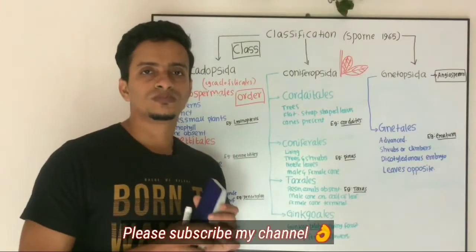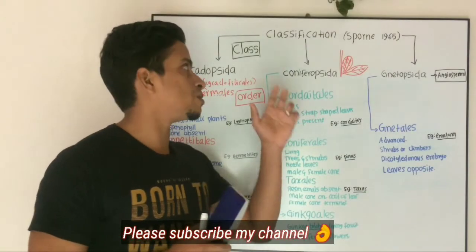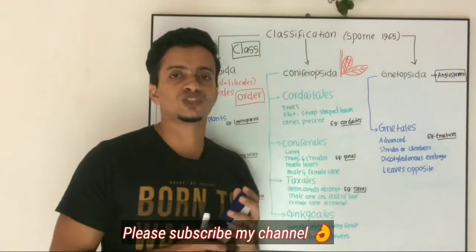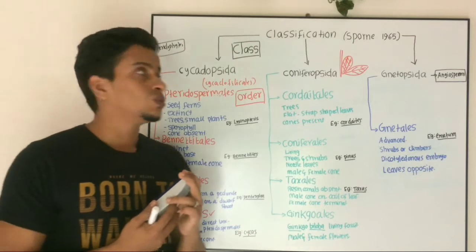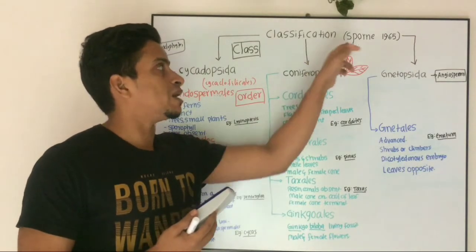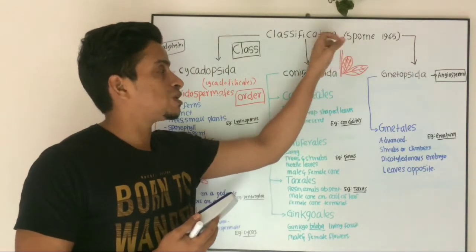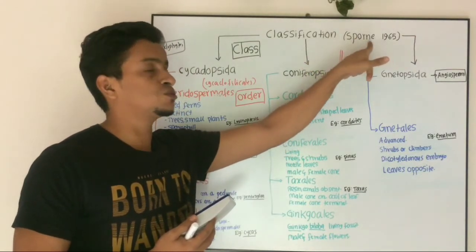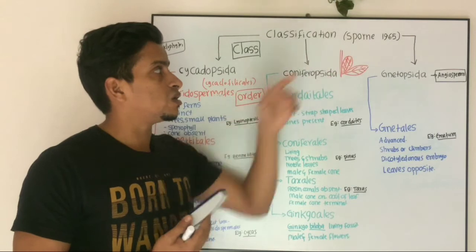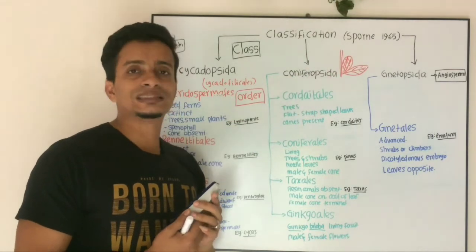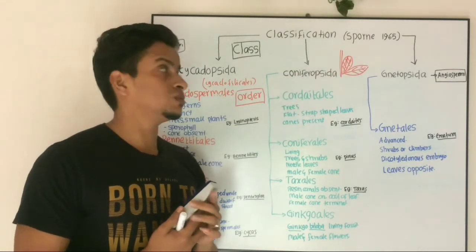Let us discuss about the classification of gymnosperm, which was proposed by Sporne in 1965.